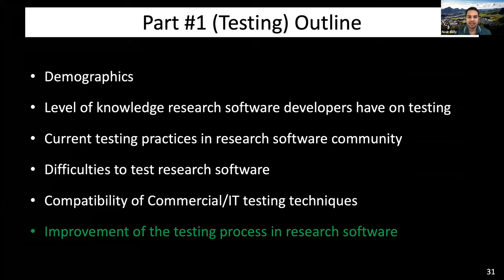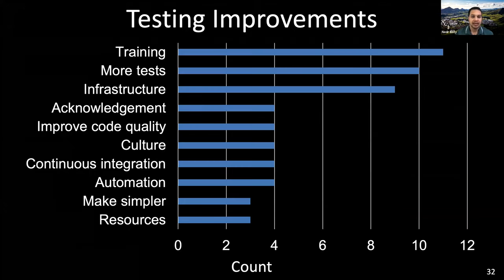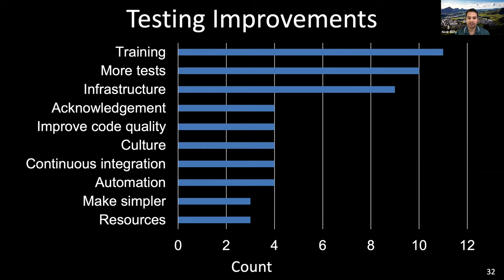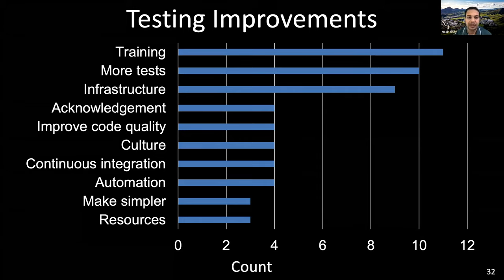What improvements do research software developers need in their testing process? Respondents mentioned a need for training — education, examples, and templates — so that they can use proper testing methods. They also need more types of tests and infrastructure support to cover the specific needs of research software. Another important aspect is acknowledgement for time and effort spent on testing. Respondents also mentioned creating a culture of testing in the research software developer community to help improve code quality and continuous integration. Making the testing process simpler and providing enough resources can potentially improve testing.